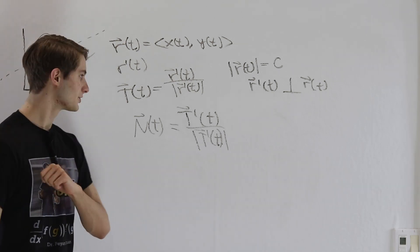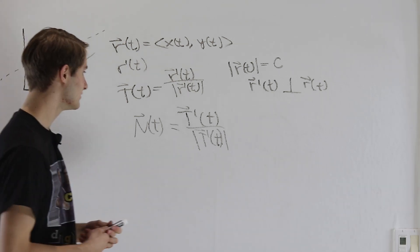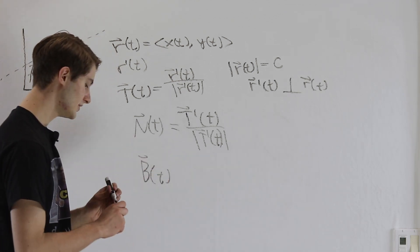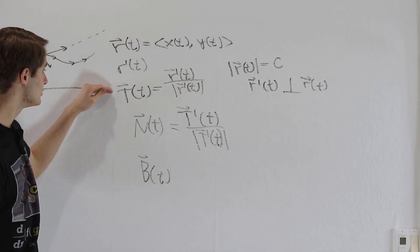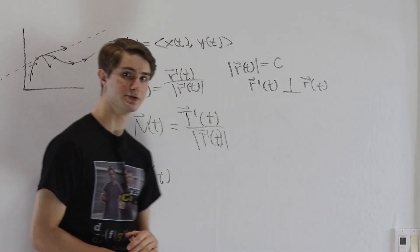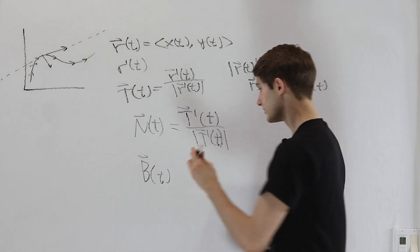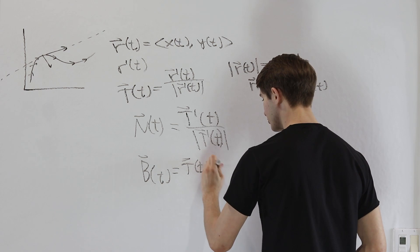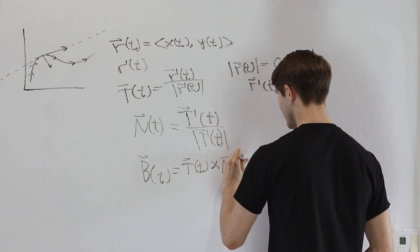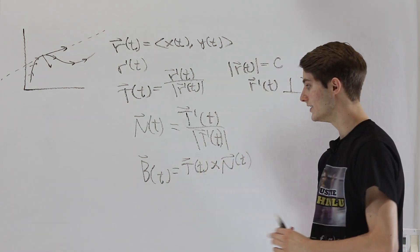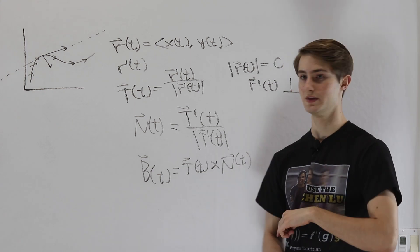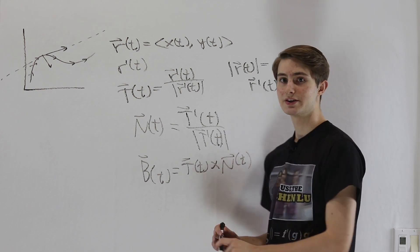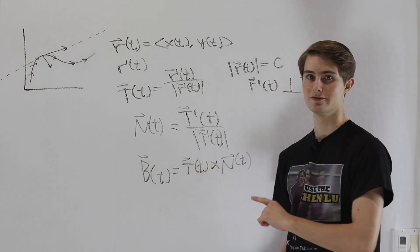The last type of vector we're going to look at is nice and simple — it's called the binormal vector, B of t. We already have two vectors that are orthogonal to each other. We know that if we take T of t and cross it with N of t, we're going to get another vector that's normal to both of them. So that's what we define as the binormal vector of the curve. These three vectors together give us all the information that we need.